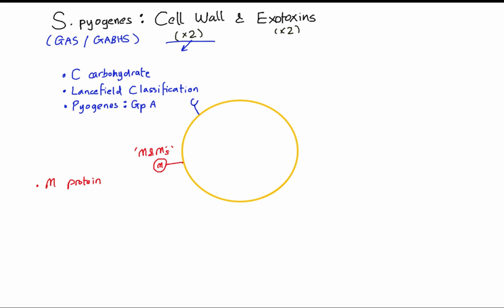Number one: M protein inhibits complement binding to the strep pyogenes cell, and so it inhibits phagocytosis. This allows the bacteria to multiply rapidly in tissue and this can help it cause necrotizing fasciitis.